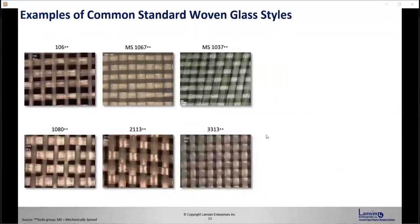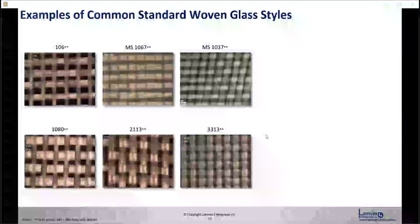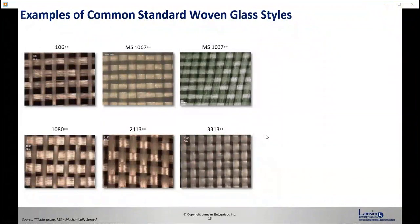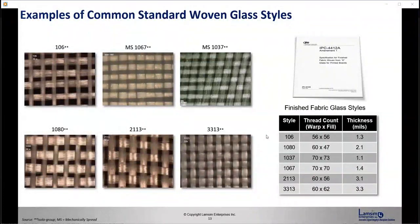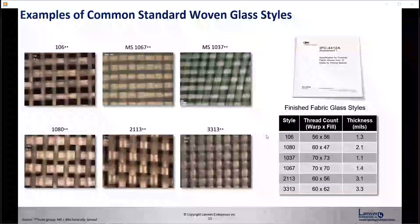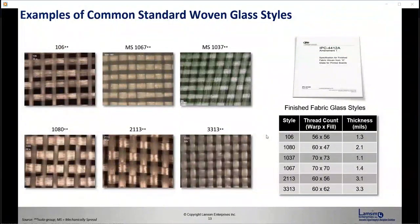Here's some examples of common standard woven glass styles from Isola. And you can see the weave pattern is different for each style, glass style number. And each number is unique. And they're documented in the IPC-4412A document. And that's a useful document that describes each glass style cloth, the warp and the fill dimensions, the weight, and many other things.